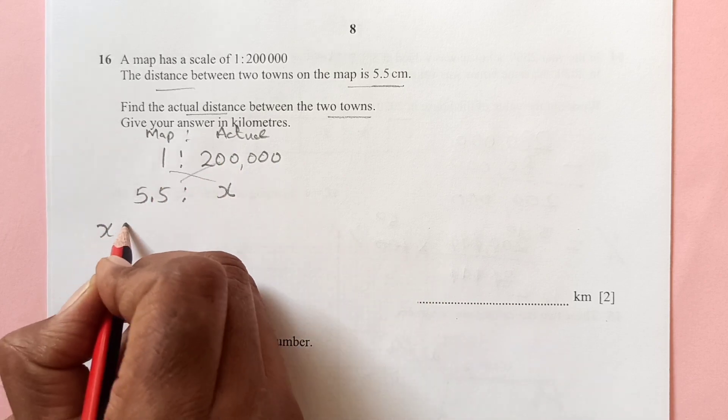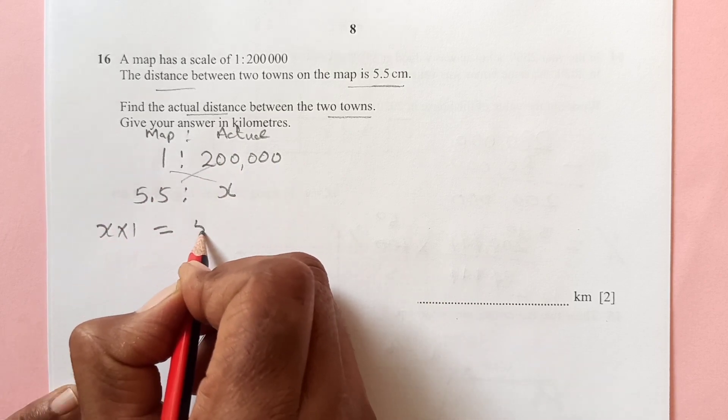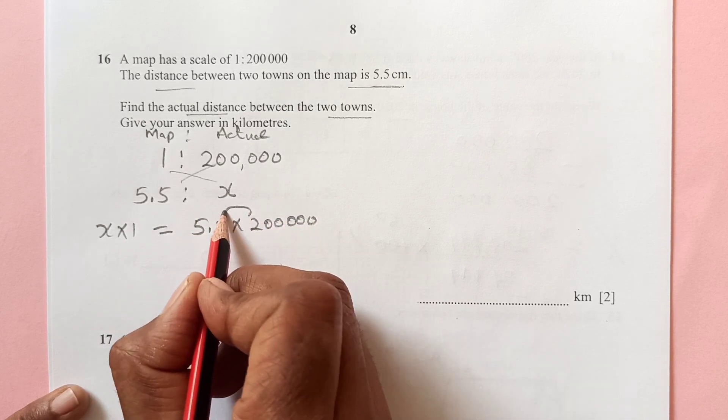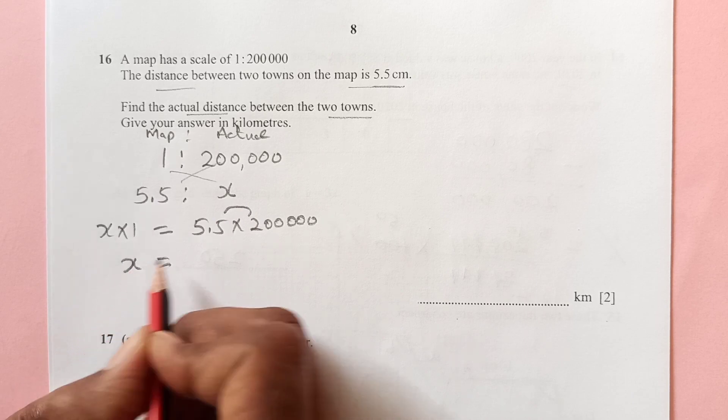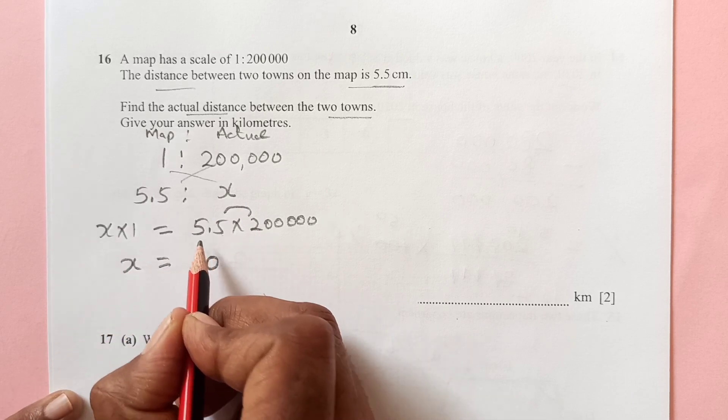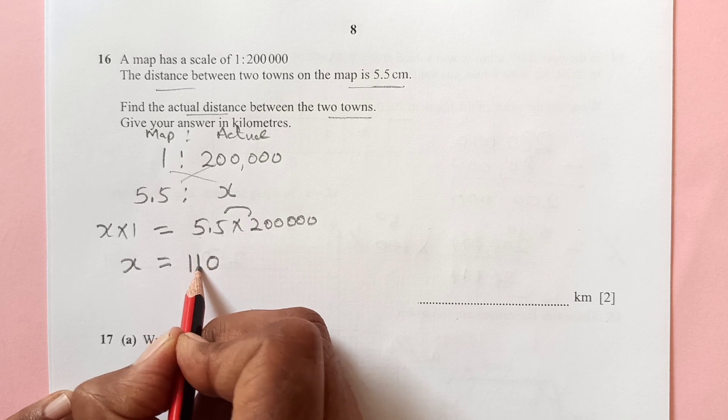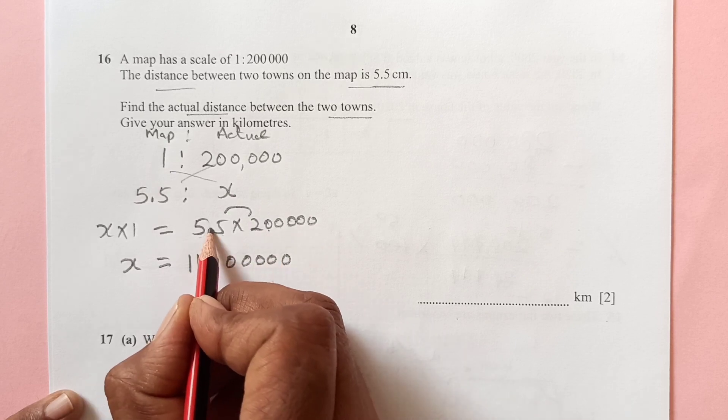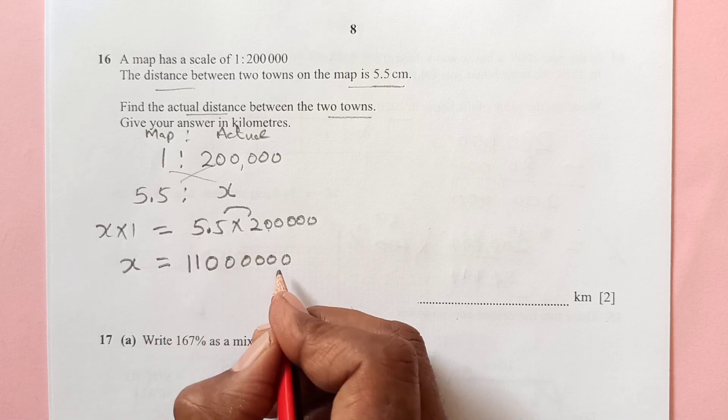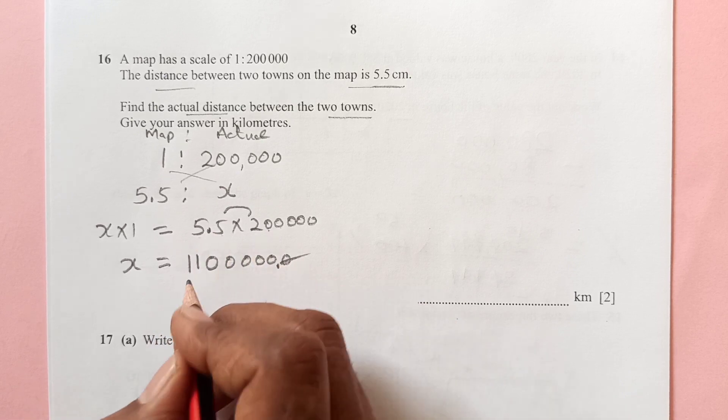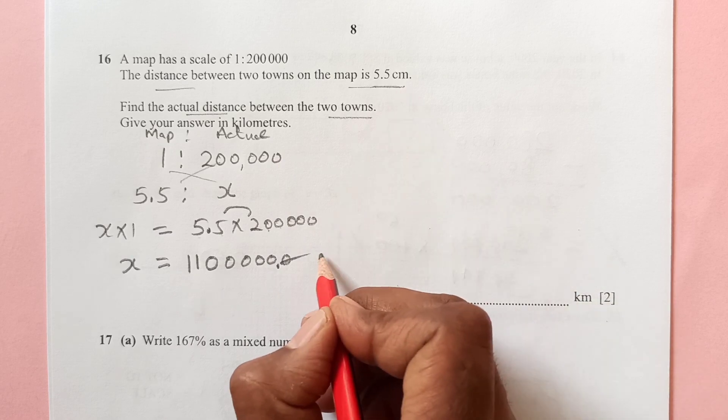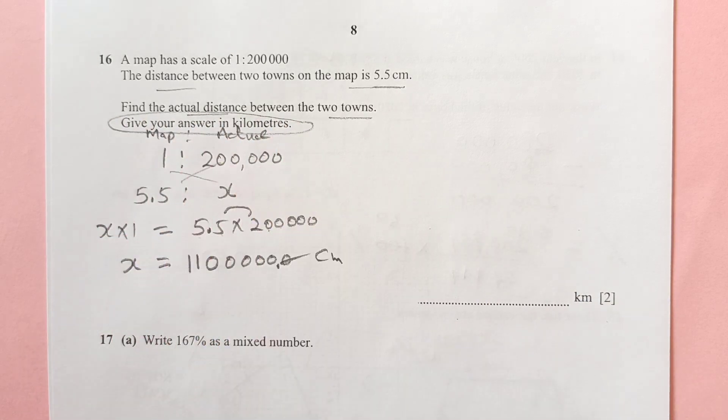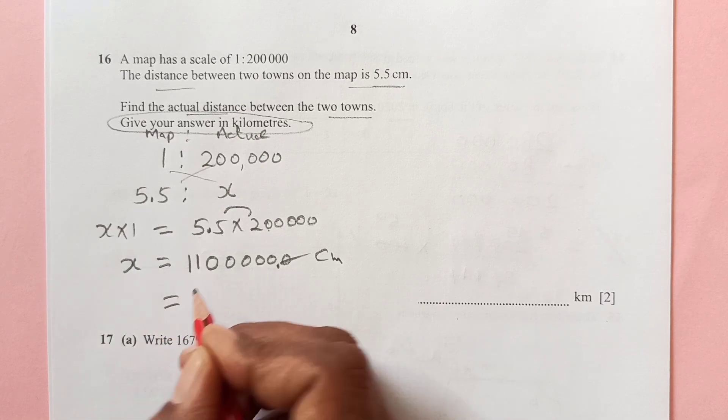So x times 1 gives you 5.5 times 200,000. So now you multiply this, 5 times 2 is 10, 5 times 2 is 10 plus 1 is 11. But remember we have decimal place here, so put decimal place. So now this answer is in centimeters. The question says give your answer as kilometers. So to give answer in kilometers.